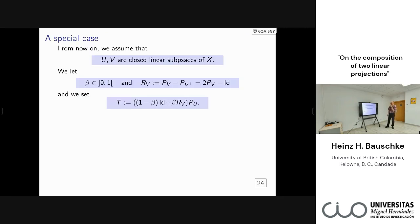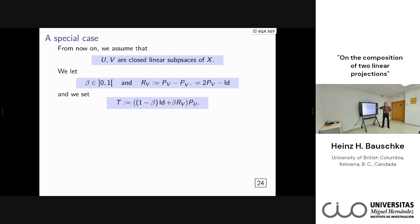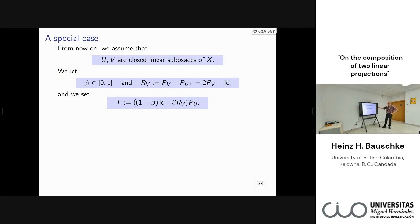Here is the main result. We do a little better than just looking at the composition of two projections: the inner operator is a projection onto a linear subspace U, but the outer is a relaxation — a beta-relaxation of the reflection onto V (the householder transformation). When beta = 1/2, we recover P_V, the projection onto V. So the operator we study is T = (1-beta)·I + beta·(2P_V - I) ∘ P_U.